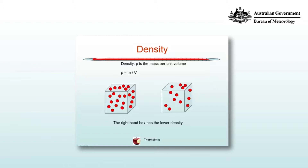Density is a fundamental concept in atmospheric thermodynamics and atmospheric dynamics. Density is simply the mass per unit volume, and we indicate density by the Greek letter rho. In order to find the density, we take the mass of our constituents and divide through by the total volume. In standard scientific units, this will be kilograms per metre cubed.